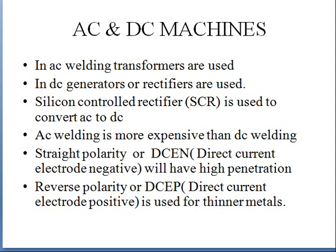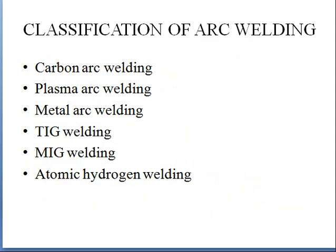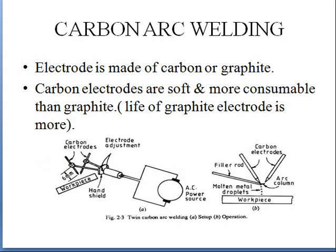In AC welding, transformers are used; in DC welding, generators or rectifiers are used — a Silicon Controlled Rectifier (SCR) converts AC to DC. AC welding is more expensive than DC welding. Straight polarity means the workpiece is connected to positive; reverse polarity means the workpiece is connected to negative. Arc welding is classified into different types: carbon arc welding, plasma arc welding, metal arc welding, TIG welding, MIG welding, and atomic hydrogen welding.